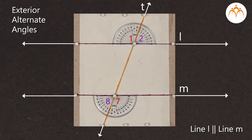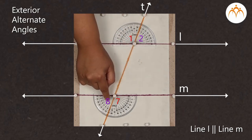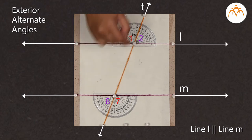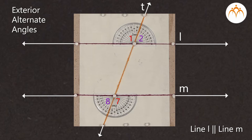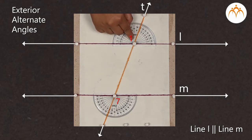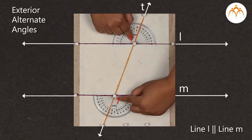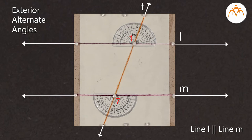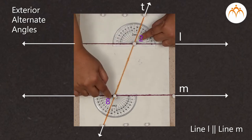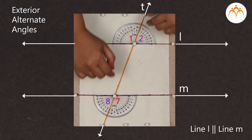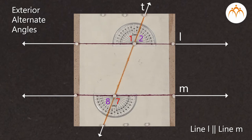So, angle 1, angle 2, angle 7 and angle 8 are called as exterior angles. Out of these 4 angles, we get 2 pairs of angles. The first pair is of angle 1 and angle 7, and the second pair is of angle 2 and angle 8. These are called as pairs of exterior alternate angles.